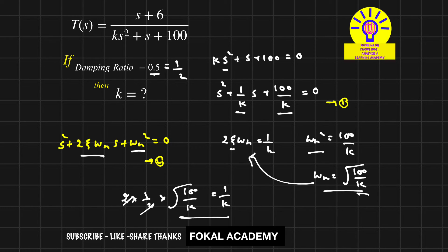Squaring both sides: 100/k=1/k². Simplifying: 1/k=100, so k=1/100.